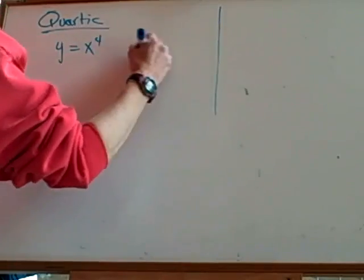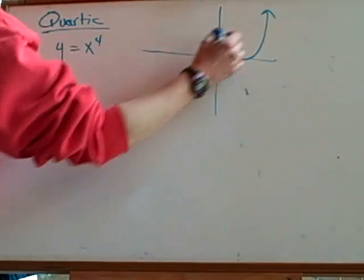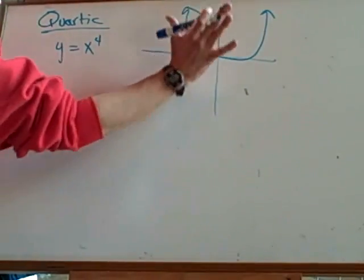Basically, you look at it, it's going to look a lot like your parabola, only wider at the bottom. It kind of looks like a mason jar a little bit.